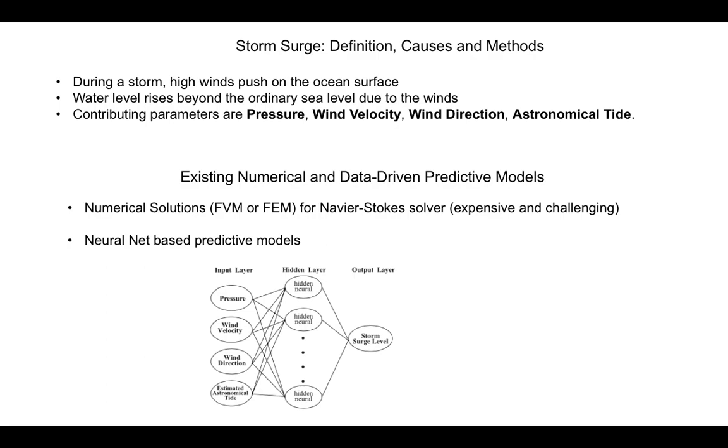The neural network trains on these data and tries to come up with a non-linear model that actually fits these four contributing parameters in this case and predicts new storm surge levels in case of a new incoming storm with different high pressure values, velocities and so on.